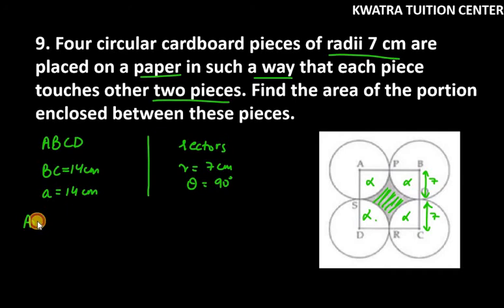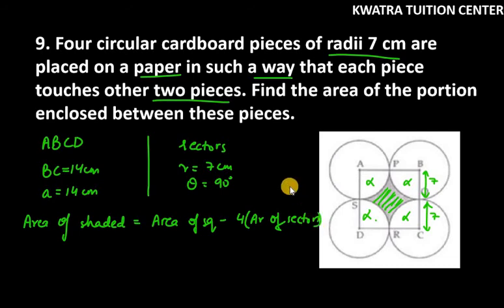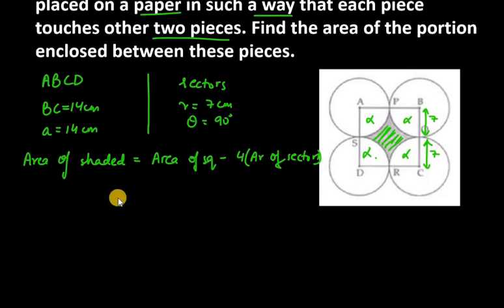So, area of shaded portion will be area of square minus four times area of sectors. Because we have four sectors that are the same, so we are doing four times. What will be area of square?